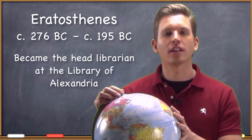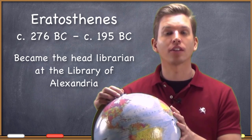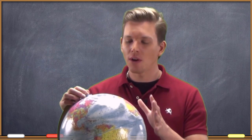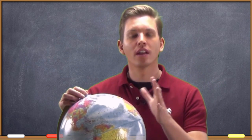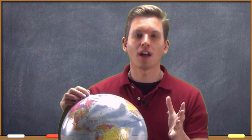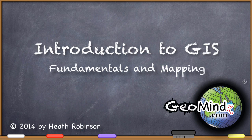While working at the Library of Alexandria, Eratosthenes was struck with an idea that would allow him to determine the shape of the Earth and also how large it was. Let's take a look at how he was able to determine that using some very simple observations and some basic geometry.